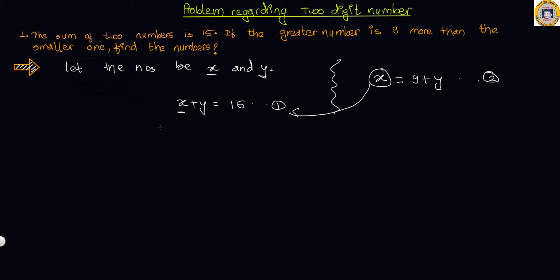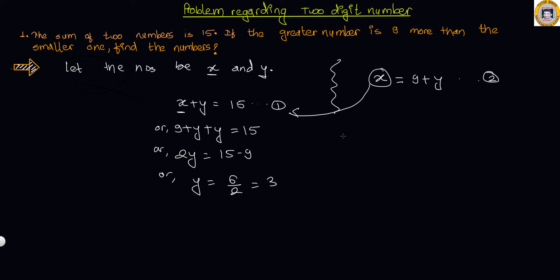So 9 plus Y plus Y equals 15, or 2Y equals 15 minus 9, or Y equals 6 over 2, which is 3. Now substituting Y equals 3 into equation 2, we get X equals 9 plus 3, which is 12. So our numbers are 12 and 3. These are the required numbers.